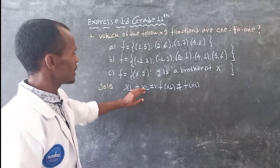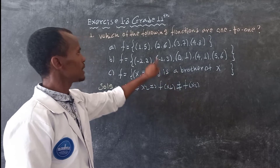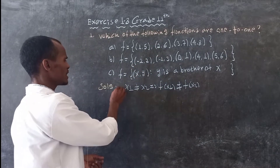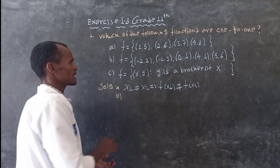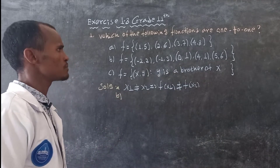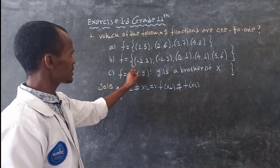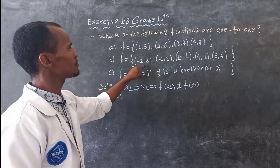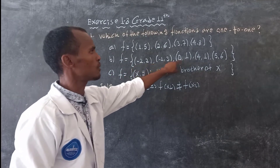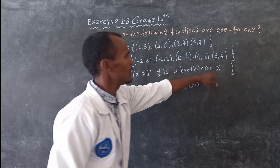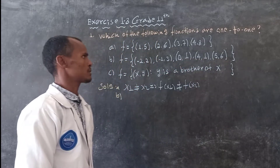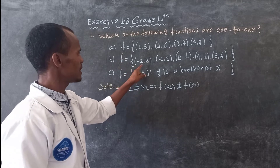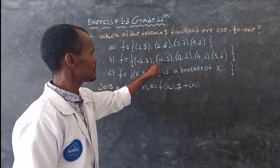So let's see. This condition is: x1 is not equal to x2. This condition is defined as negative 2 and 2, negative 1, 3 and 0, 1, 4, 1, 9, 7.